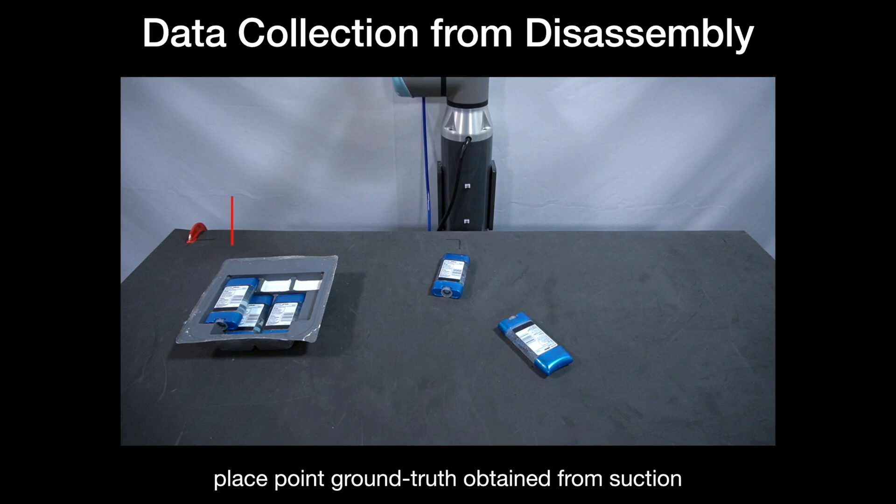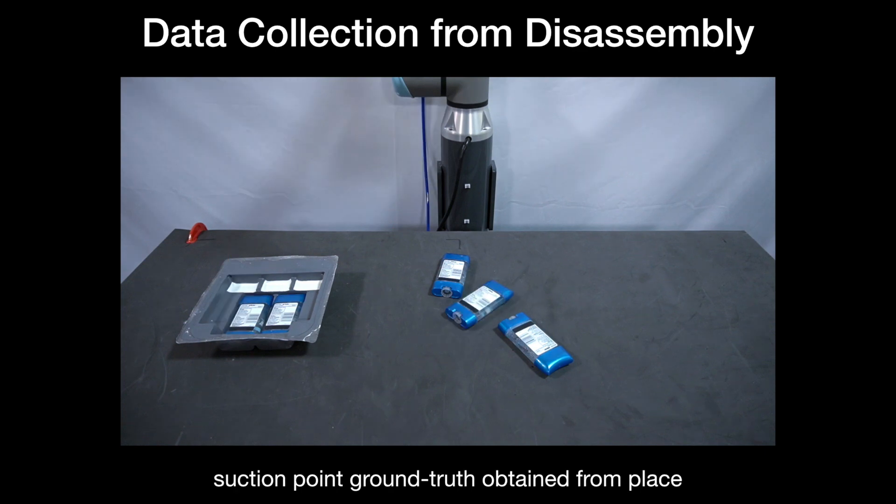For the placing network, we use the suction location P and the height map taken after the suction action as a training pair. The training data for the suction network consists of two sets of input label pairs: the kit height map and the suction position P, and the object height map and the place position Q.